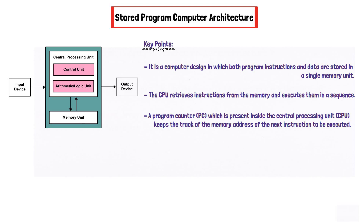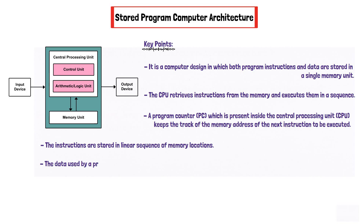In stored program computer architecture, the instructions are stored in a linear sequence of memory locations, that is one after the other. Additionally, the data used by a program is stored in the memory unit and can be accessed by the CPU through the memory addresses.